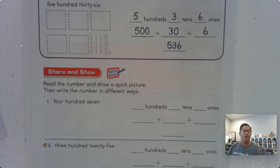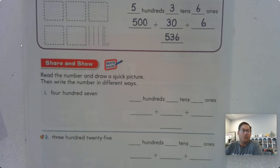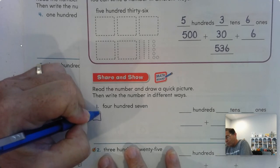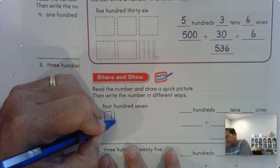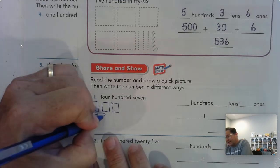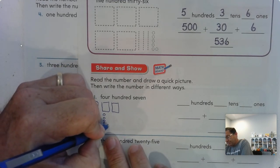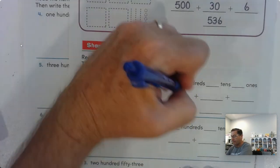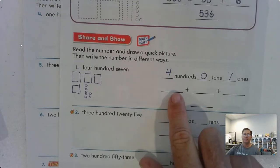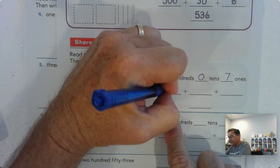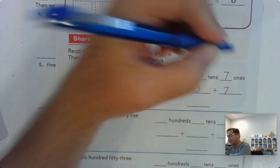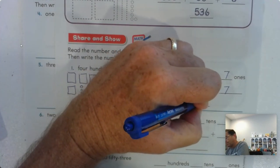Let's try one on our own. Read the number and draw a quick picture. So there's four hundred seven — that means there's no tens, so we need seven ones. That's the quick picture: four hundreds, no tens, and seven ones. Now let's write that in its place values: four hundreds is four hundred, zero tens is zero, seven ones is seven. Put it together in standard form: four hundred seven.